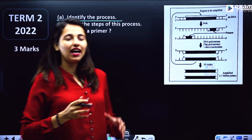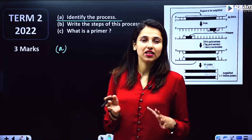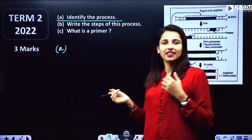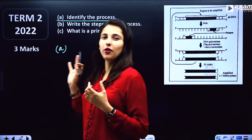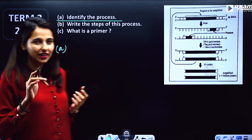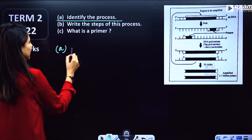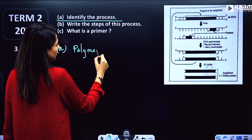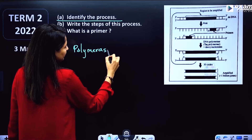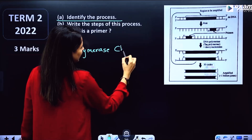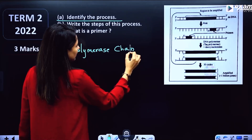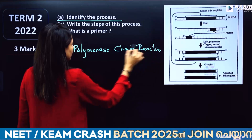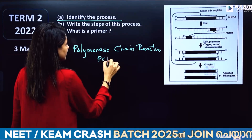We separate the DNA process — the recombinant DNA technology process. It's an important step — the technique is Polymerase Chain Reaction, that is PCR. For short, we call it PCR.